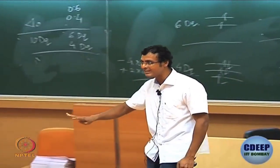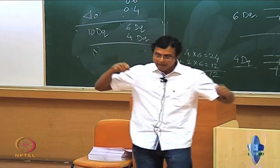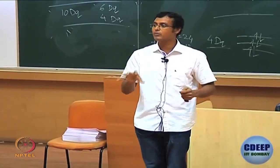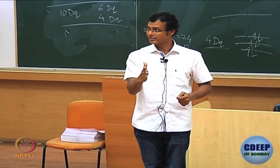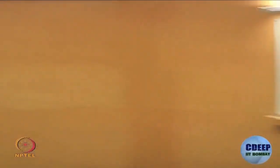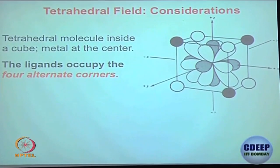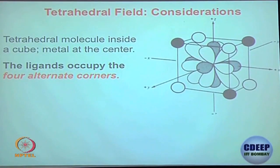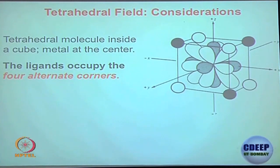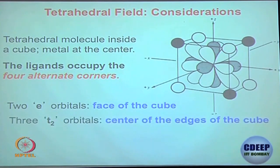The reason is very simple: number of ligands are less — 4 versus 6. Also, the approach of the ligands with respect to the orbitals is not direct; it is almost a side approach. The ligands occupy alternate corners of the cube — imagine methane CH4, where carbon is the metal center and the 4 hydrogens are your 4 ligands. The orbitals are called e and t2.